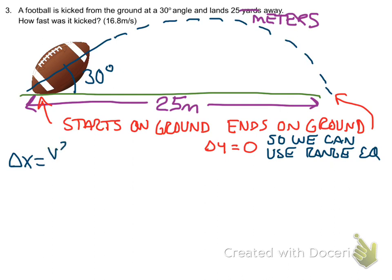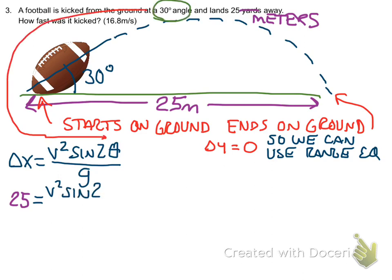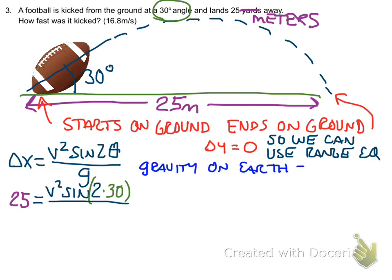Remember that the range equation is delta x is v squared sine 2 theta over g. And in this problem, delta x is 25. So 25 equals v squared times sine twice our angle, and our angle is 30 degrees. And since we live on Earth, the gravity here is 9.8 meters per second squared, and that goes in the denominator.